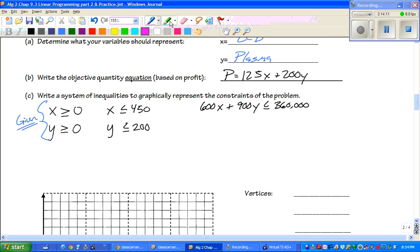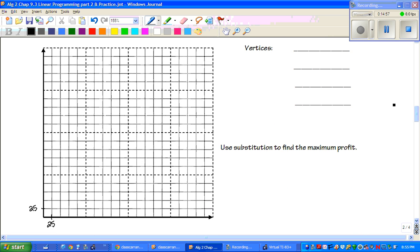Before we start graphing, we have to solve for Y over here. You get 900Y is less than or equal to negative 600X plus 360,000. Divide by 900. You can use your calculator, guys. So, Y is less than or equal to negative two-thirds X plus 400.